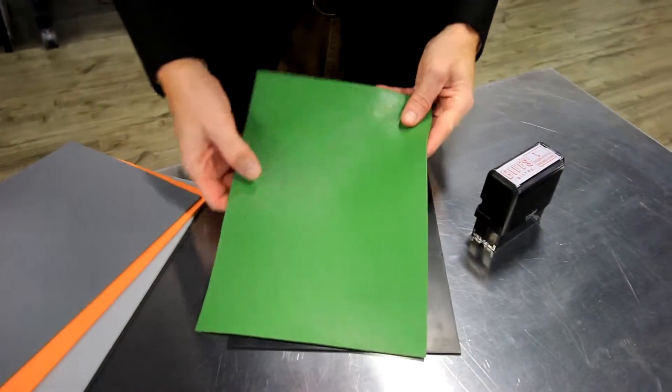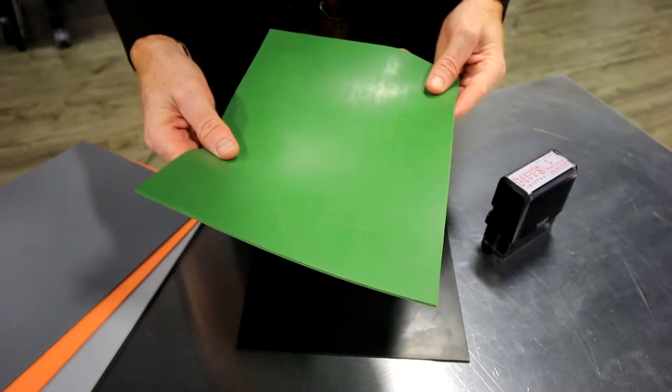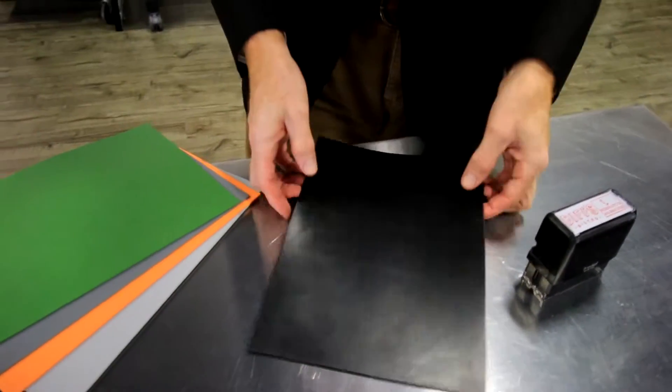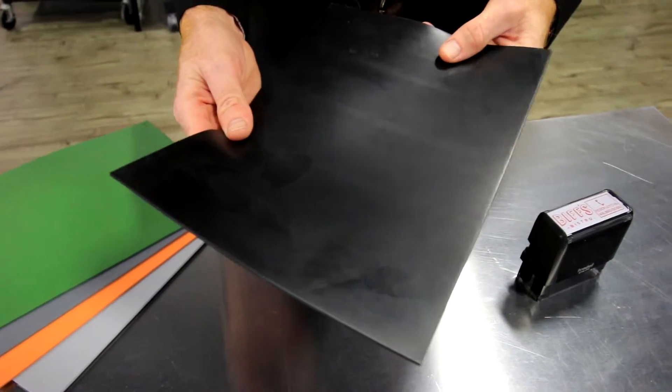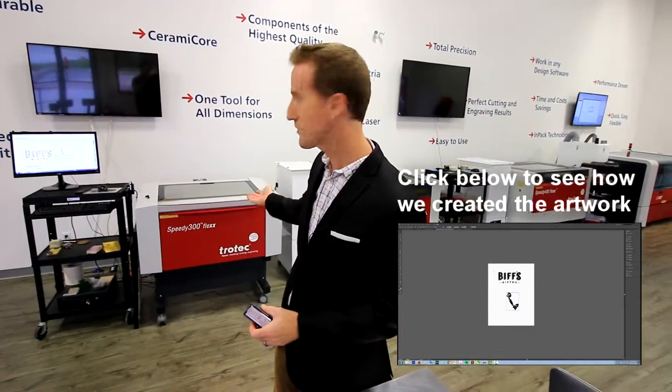This is an environmentally friendly stamp material called Eco. And finally this is Oleo and it is oil resistant and good for use in oil-based inks. Okay, let's have a look at the machine and we'll show you how it's done.